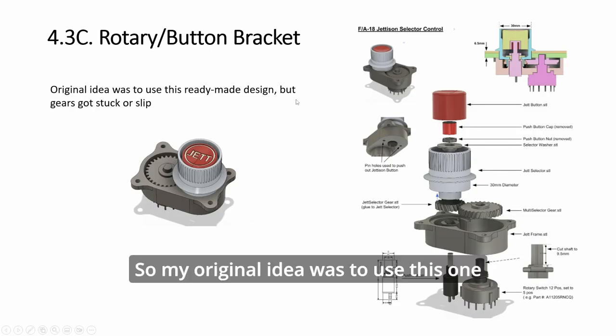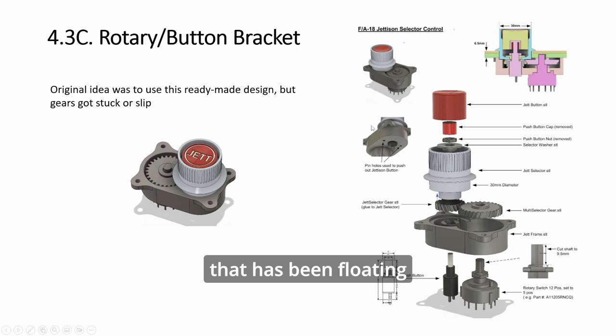My original idea was to use this one that has been floating around on Google, the F-18 jettison selector control. Push button here and you rotate, it uses gears, two gears here to control this. It's already done so I tried to use it, but fitting the gears either they get jammed or they slip, actually most of the time they slip. The whole thing was a big print but still it didn't work consistently, so I abandoned this.